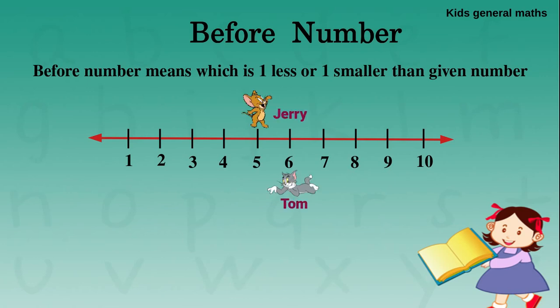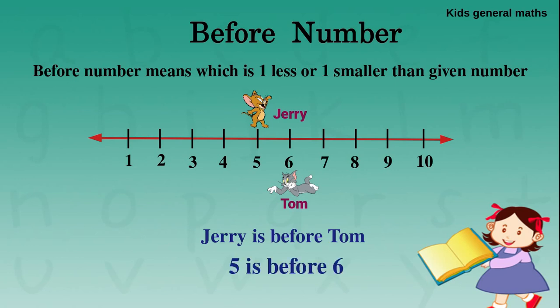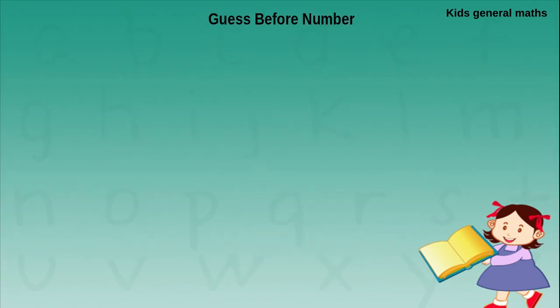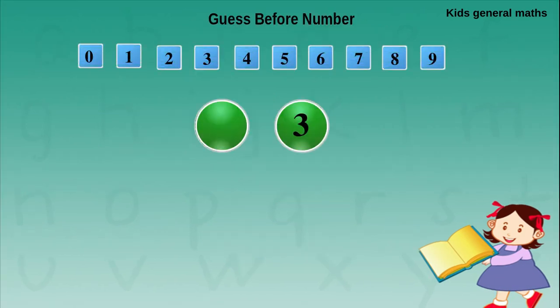In the number line, Tom and Jerry are standing. Jerry is standing on number 5 and Tom is standing on number 6. So Jerry is before Tom — that is, 5 is before 6. Now we are going to guess some before numbers. They are given 3. So before 3, what is that? In the number line, before 3 is 2. So before 3 is 2.